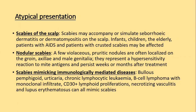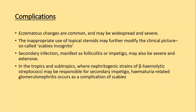Nodular scabies comprises a few violaceous pruritic nodules localized on the groin, axilla, and male genitals, representing a hypersensitivity reaction to the mite, and persists for weeks or months after treatment. Scabies can mimic immunologically mediated diseases such as bullous pemphigoid, urticaria, chronic lymphocytic leukemia, B-cell lymphoma, CD30-positive lymphoid proliferation, necrotizing vasculitis, and lupus erythematosus. Complications include eczematous changes, and inappropriate use of topical steroids modifies the clinical picture — hence known as scabies incognita.